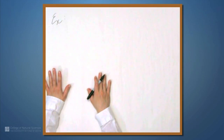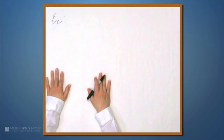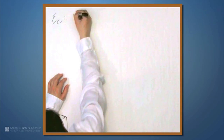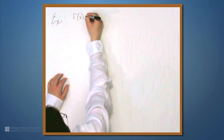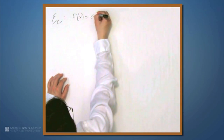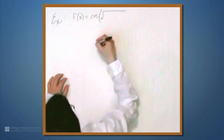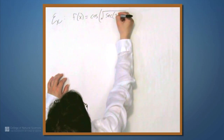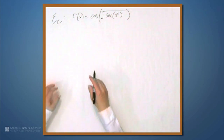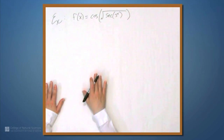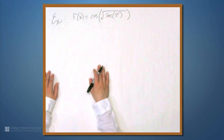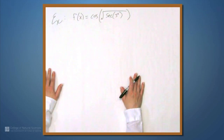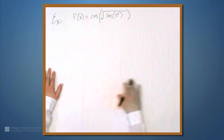Let me just say right now, you're unlikely to see anything this complicated, at least not very often, but if you can do this, you'll be fine. Let's let f of x be cosine of the square root of secant of 3 to the x. It looks terrible, but we can do it. We'll do it slowly, step by step, in one continuous process.